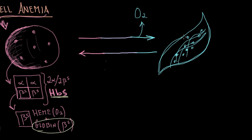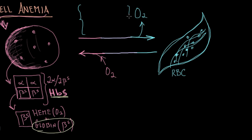These long structures distort the shape of the red blood cell and cause it to adopt a sickled shape — that's where the name comes from. The good news is that this process is reversible: if oxygen is added back and hemoglobin picks it up, the cell reverts to its normal shape. The things that cause deoxygenation — causing hemoglobin to become deoxygenated — include hypoxia, acidosis, and dehydration.